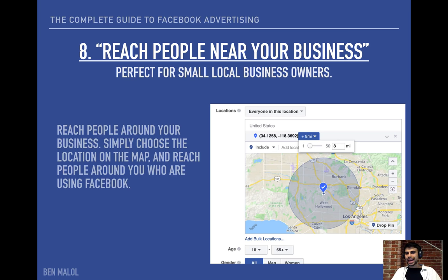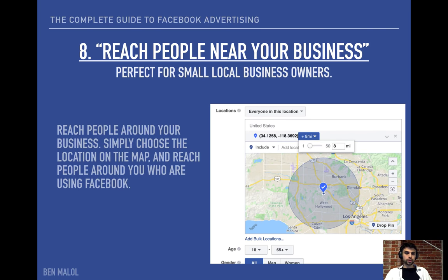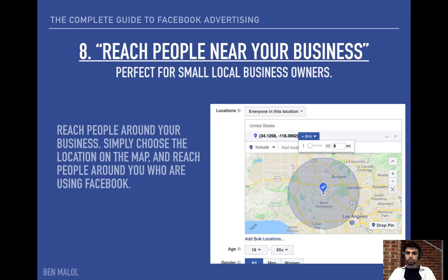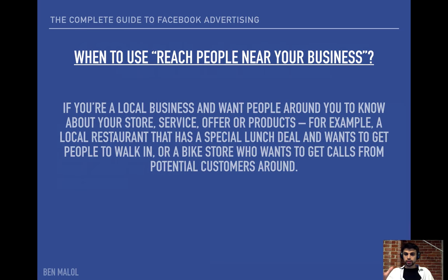The eighth objective is reaching people near your business — perfect for small local business owners. You choose a location and put a radius of 1 to 50 miles. So if you're a restaurant, bike shop, or tattoo artist and want to only reach people within 10 miles of your area, you'd use something like this.